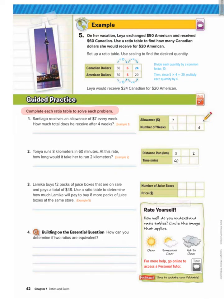Number one: Santiago receives an allowance of seven dollars every week. How much total does he receive after four weeks? So here's our ratio table. We can make equivalent ratios. So we have 7, 14, 21, 28, and then 1, 2, 3, 4. So when the number of weeks is 4, his allowance is 28. So the answer would be 28. Another way we could have done this is we could have just went right from 1 to 4 by multiplying by 4, and then we would have also multiplied 7 by 4. That's scaling. So we could have jumped right to the 4.